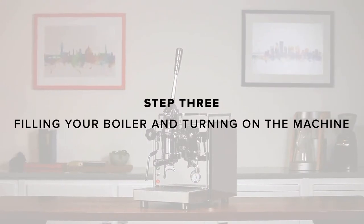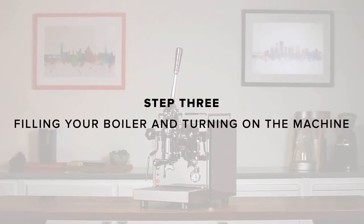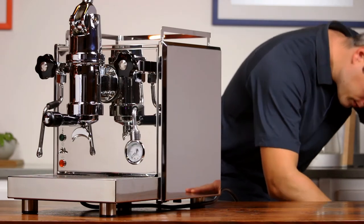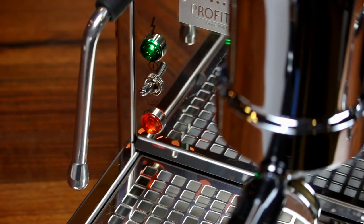Step 3. Filling your boiler and turning on the machine. Plug in the machine using the standard 15-amp plug. Flip the power switch on the front of the machine. The machine will automatically begin filling its boiler and will stop when full.